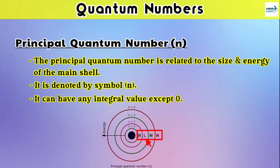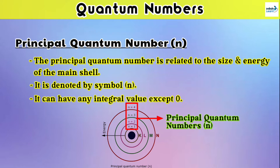Similarly, for the L shell it will be n = 2, for the M shell it will be n = 3, and for the N shell it will be n = 4, and so on. These values are called the principal quantum numbers of the different shells.